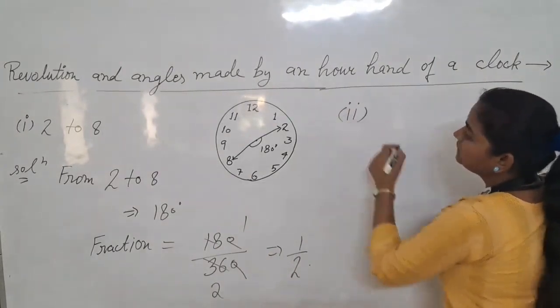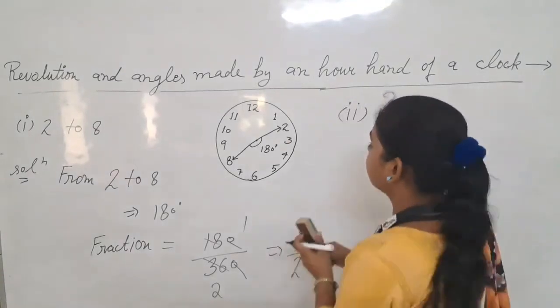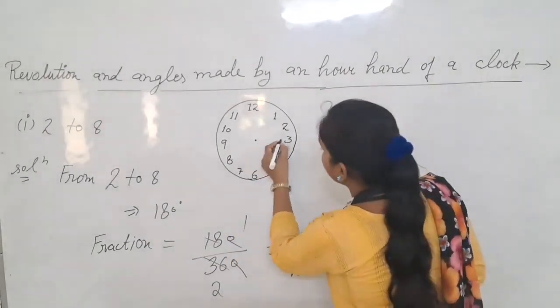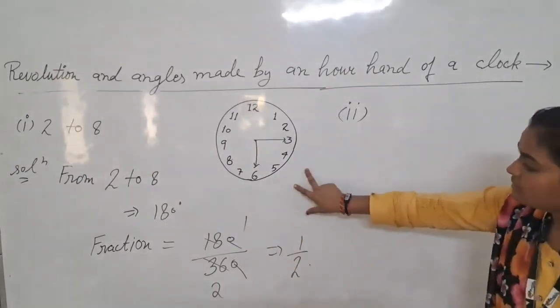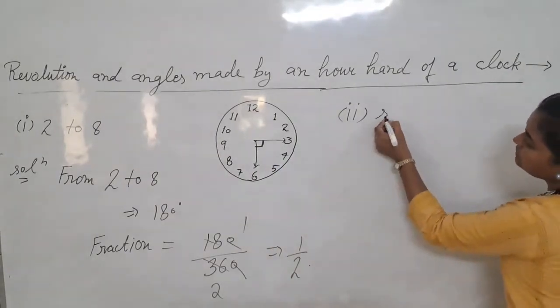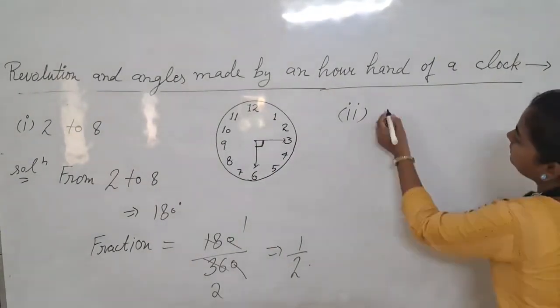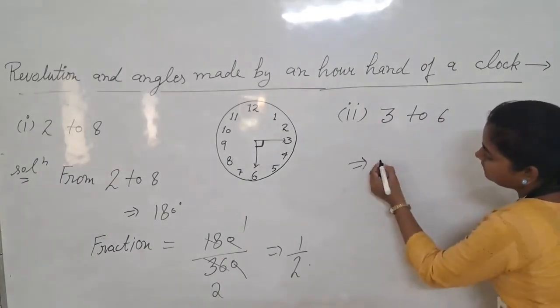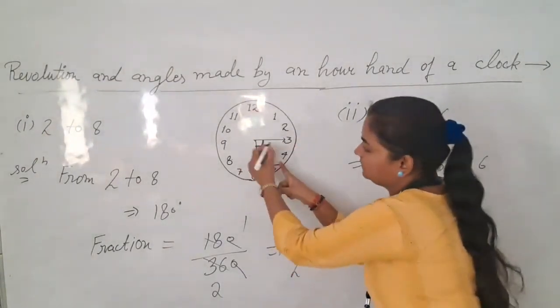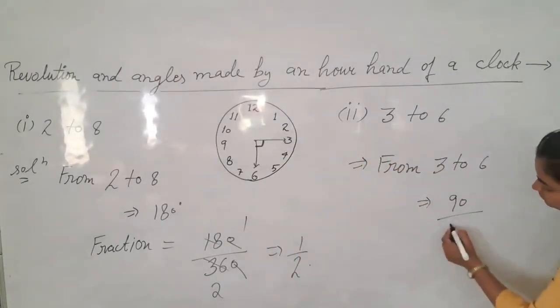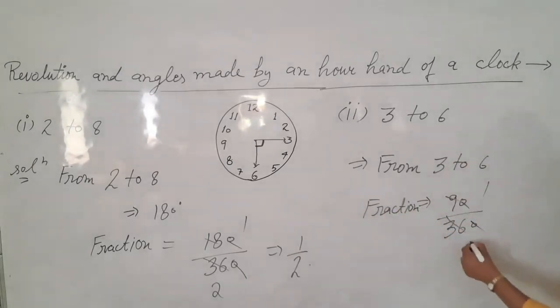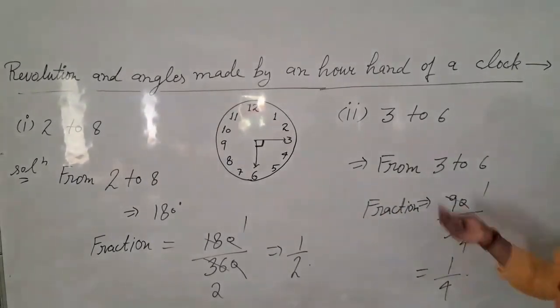Next second, we take 3 to 6. From 3 to 6, we have one right angle. The fraction is 90 upon 360, which equals 1 upon 4. That is the example for revolution of 90 degrees.